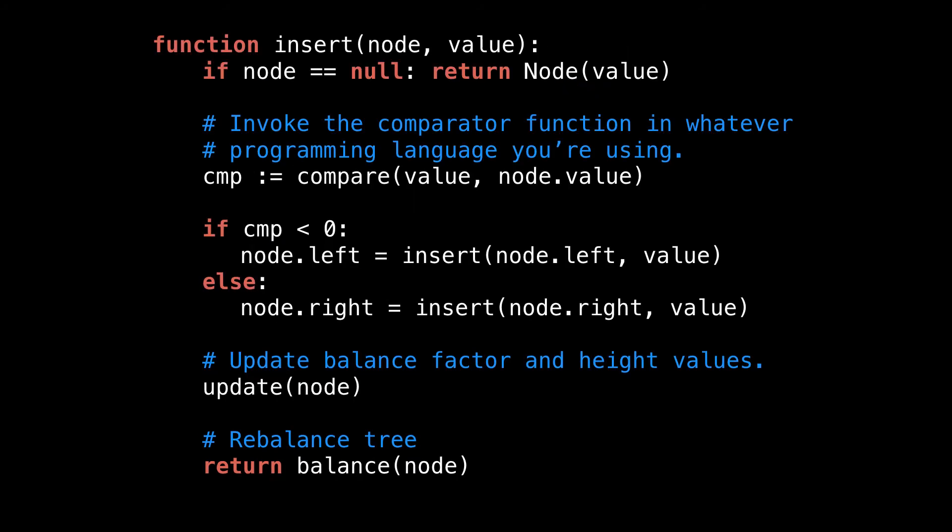The private recursive method is also simple. If we hit the base case, a null node, we simply return a new instance of the node with the value we want to insert. Otherwise, we get the comparator value with the value we're trying to insert against the current node to determine if we should go in the left or the right subtree.